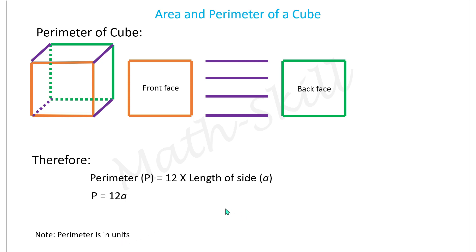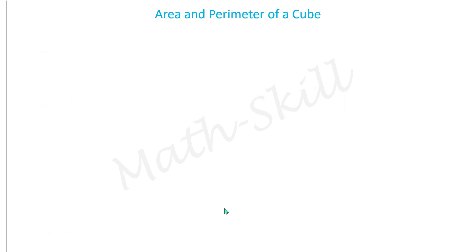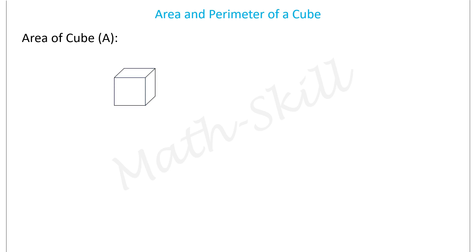Now let's try to find out the area of a cube. For a three-dimensional shape, we have lateral surface area and total surface area. Let's first consider the cube and understand what lateral surface area and total surface area mean.